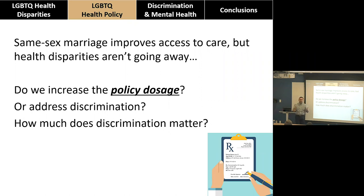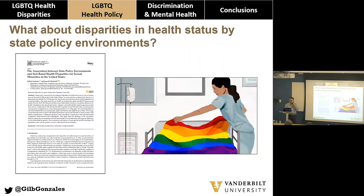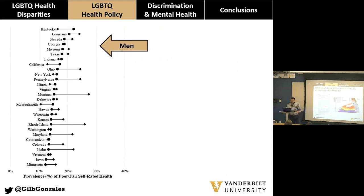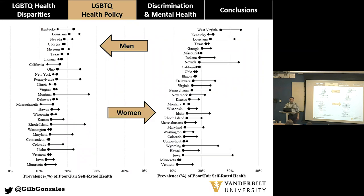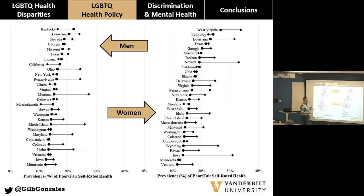We studied what happens to disparities when sexual minorities live in a state with comprehensive protections against discrimination in those five areas. This is published in the International Journal of Environmental Research and Public Health — open access. We look at state-level disparities in poor and fair self-rated health using the CDC's Behavioral Risk Factor Surveillance System. Straight adults are in gray bars, gay and lesbian in gold, bisexuals in black bars.